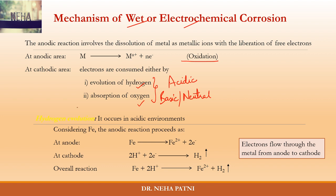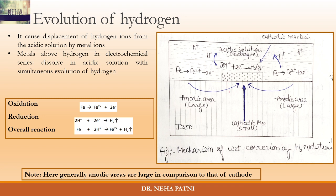In hydrogen evolution, the anodic reaction remains the same — oxidation. At the cathode, the medium supplies H⁺ ions, which take up electrons and hydrogen gas is liberated. Consider an iron metal: one area develops as a cathodic area and another as the anodic area.